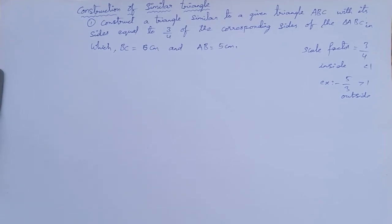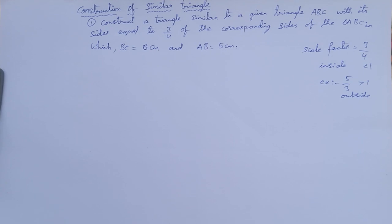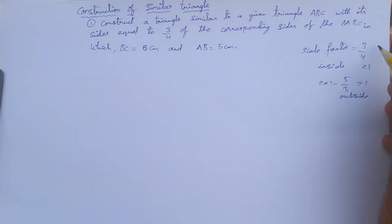Here is the construction of a triangle. The question is: construct a triangle similar to a given triangle ABC with its sides equal to 3/4 of the corresponding sides of triangle ABC, in which BC is equal to 6 centimeters and AB is equal to 5 centimeters.